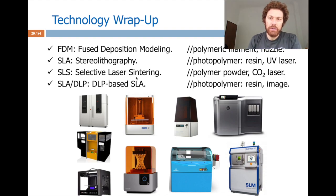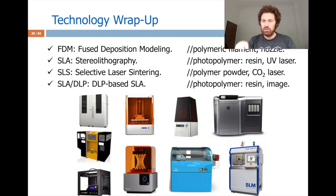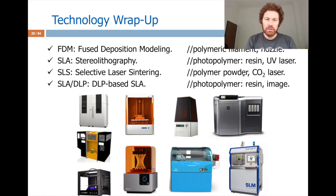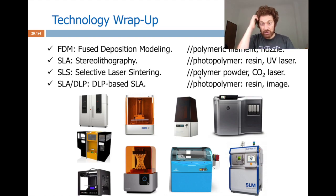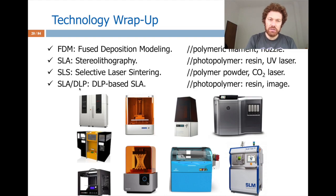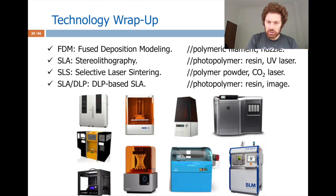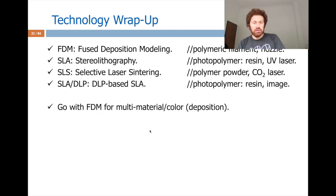To wrap up: FDM uses a filament that gets melted and then frozen by fans around the nozzle, deposited through the nozzle. SLA uses resin (a photopolymer) hardened with a UV laser. SLS uses polymer powder and a CO2 laser to freeze the powder. DLP-based SLA also uses liquid resin, but projects an image instead of tracing a laser path. The machines look quite different depending on the technology.